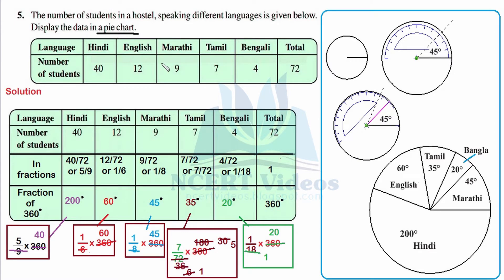The question asks for a pie chart, so we need to perform two different actions: the first is to find the sector angle, and the second is to actually draw the pie chart. Let's follow the tabular representation. The first two columns are the same as in the question itself, and then we find the fractions or proportions — 40 out of a total of 72.